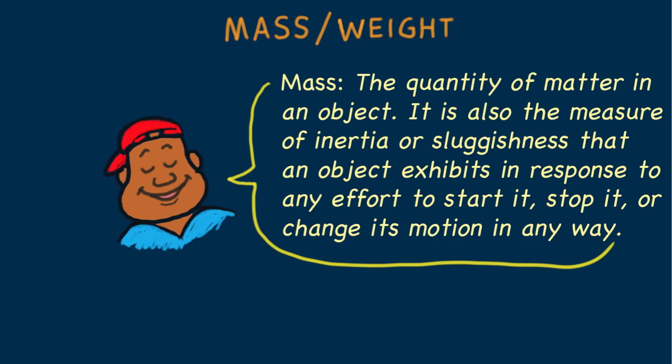Mass: the quantity of matter in an object. It is also the measure of the inertia, or sluggishness, that an object exhibits in response to any effort made to start it, stop it, or change its state of motion in any way. Mass has to do with the laziness of matter, the inherent resistance to changes in motion.